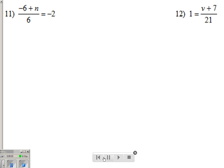A different style of equation here. Basically, you'll notice that negative 6 plus n is all being divided by 6. So since it's all being divided by 6, let's just take that 6 and multiply it by both sides.